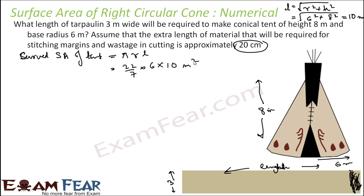Using pi = 22/7 or 3.14, the curved surface area comes out to approximately 188.4 meters square — that is the total curved surface area of this conical tent.